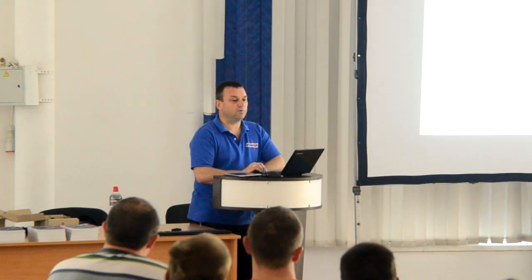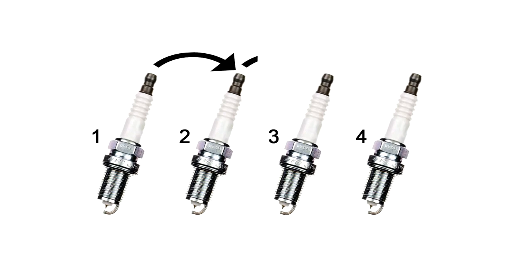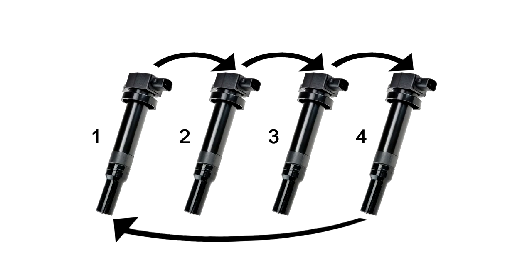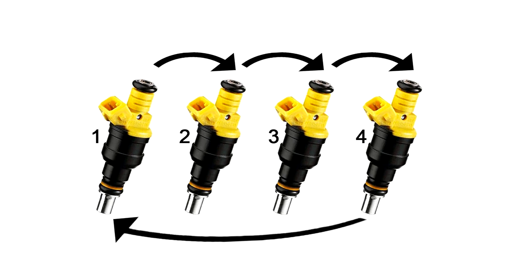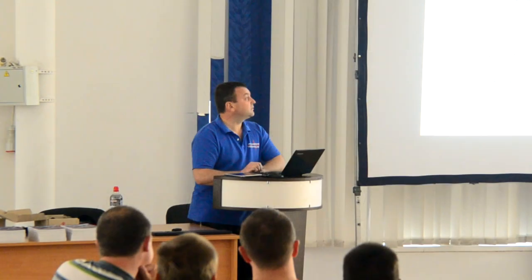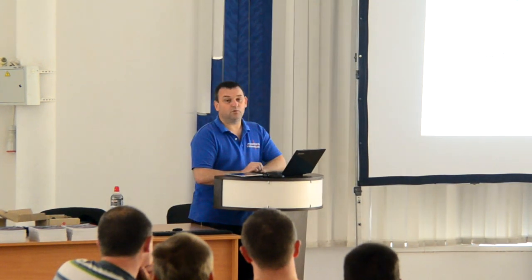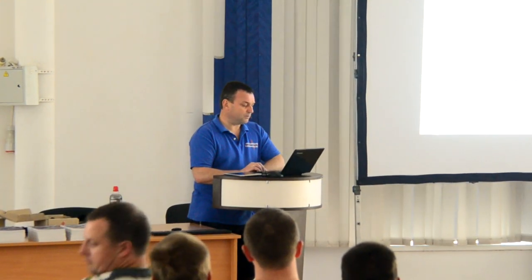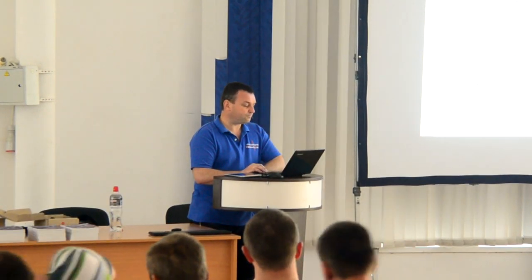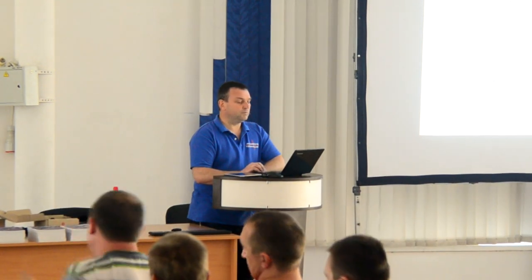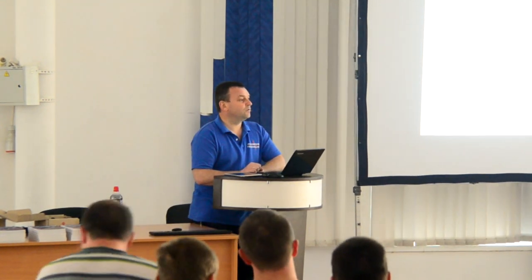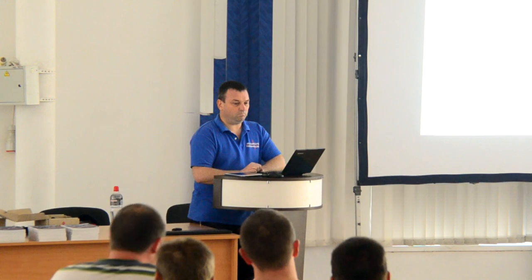If the misfire is occurring at idle, a very efficient method for troubleshooting is to swap, one at a time, the ignition coil, the spark plug, spark plug wires if used, or even the injector with a cylinder that is not experiencing misfires. If the misfire moves to the other cylinder, as indicated on the scan tool, the defective part is found. Diagnosing parts by substitution is sometimes referred to as swap-tronics. This method works well if the misfire is consistent and repeatable, and also depends on the PCM software being able to consistently identify the misfiring cylinder, especially if the misfire is random or inconsistent.